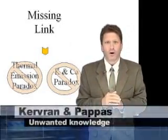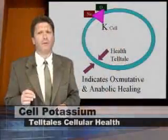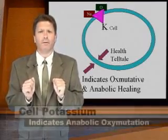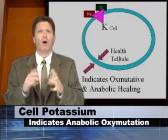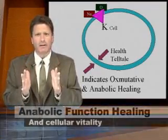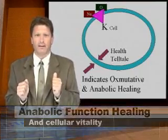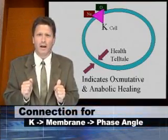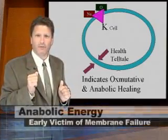Thank you, Professor Pappas and Dr. Kerbran. Cellular health is often measured by adequate cellular potassium levels because cellular potassium levels tell-tale anabolic energy production or oxymutation. Anabolic function, in turn, reflects healing capacity and cellular vitality. This finally explains the correlation between health, cell membrane integrity measured by phase angle, and cellular potassium levels.